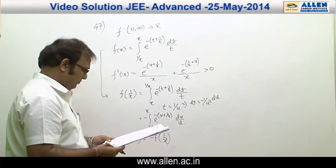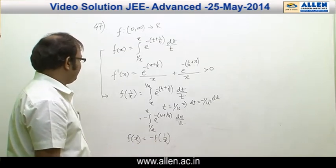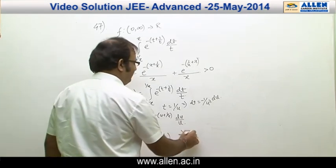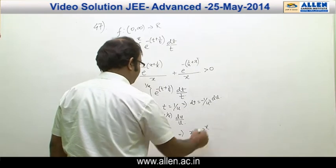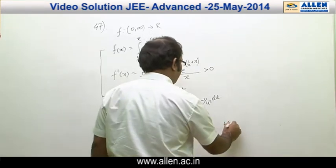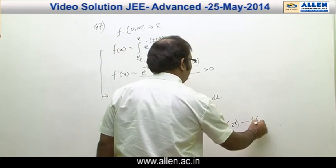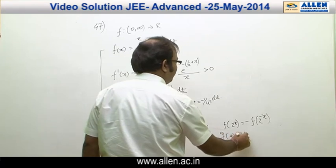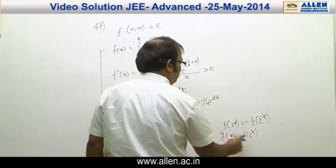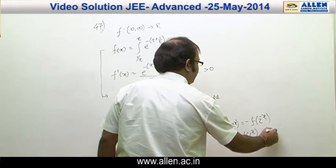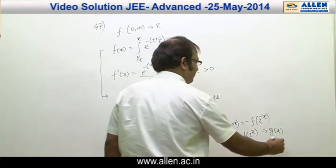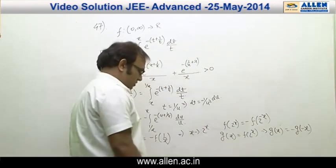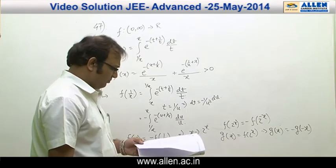For option D, if we replace x by 2^x in the relation, we get f(2^x) = −f(2^(−x)). So if we consider g(x) = f(2^x), then g(x) = −g(−x), and therefore the function is an odd function — so option D is correct.